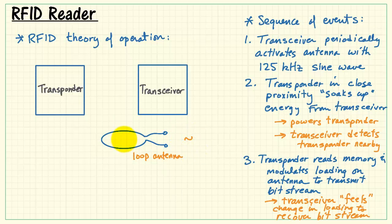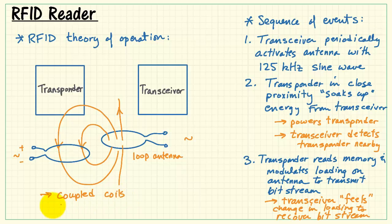Now, here at the reader, we use a sinusoidal source to activate the loop antenna, and that develops a time-varying magnetic field. When that field intercepts the loop antenna of the transponder, that induces a corresponding voltage. We say that these two coils are coupled together by mutual inductance.